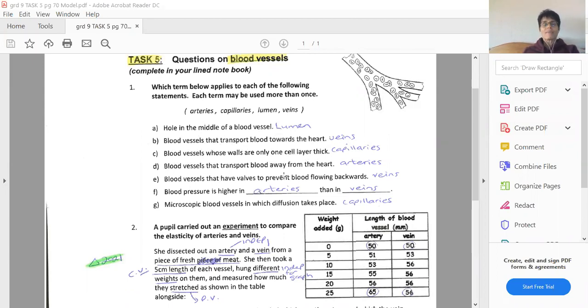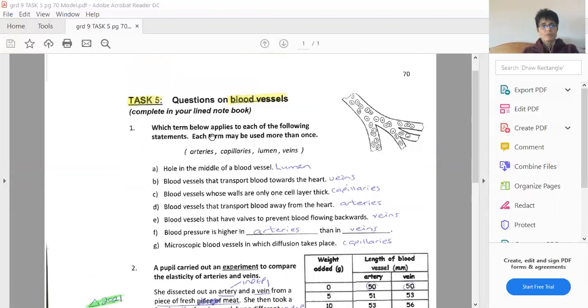Blood vessels that transport blood away from the heart, arteries. Blood vessels that have valves to prevent blood from flowing backwards, the veins, so the blood moves up the legs and doesn't pool and cause the veins to become stretchy and then you get varicose veins. All right, remember there was a word list at the top here that you could use.